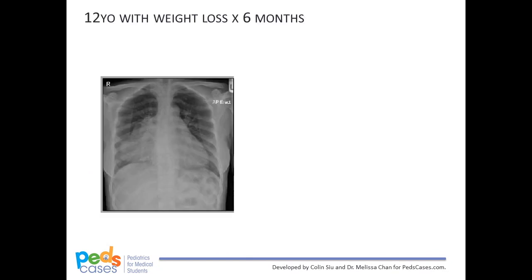Our second case involves a 12-year-old child presenting with weight loss over the last six months. The chest film is slightly underexposed as the vertebral bodies are not visible through the heart. Nine to ten posterior ribs are visible and the clavicles are equidistant from the spine. Let's take a stab at interpreting this chest x-ray. Are there any abnormalities present on the film and what is your diagnosis? Because this patient is 12 years old, we do not expect to see the thymus. On the film, there is an opacity at the right lower lobe of the lung and hilar vessels also appear more prominent.